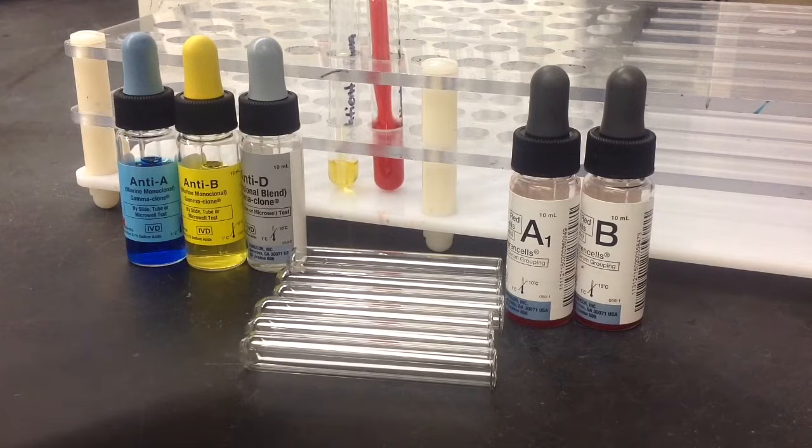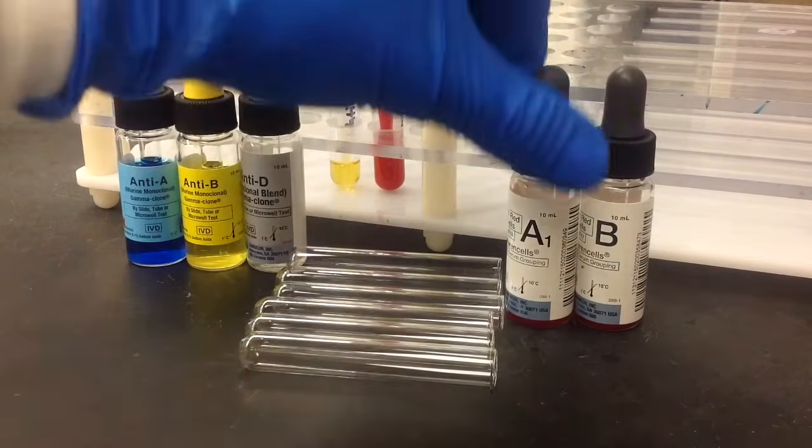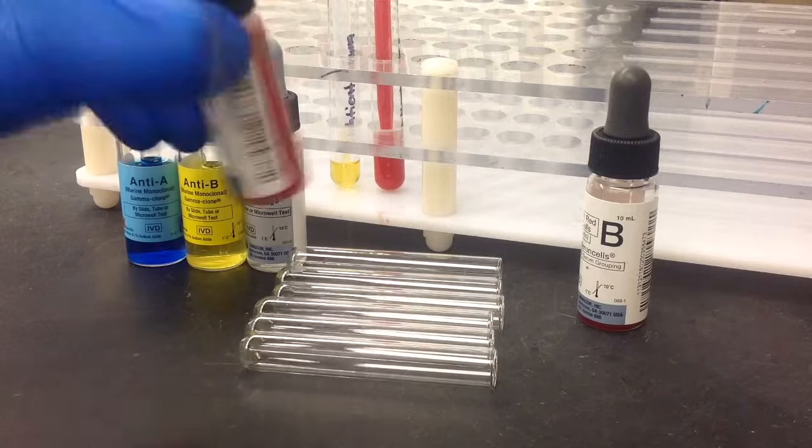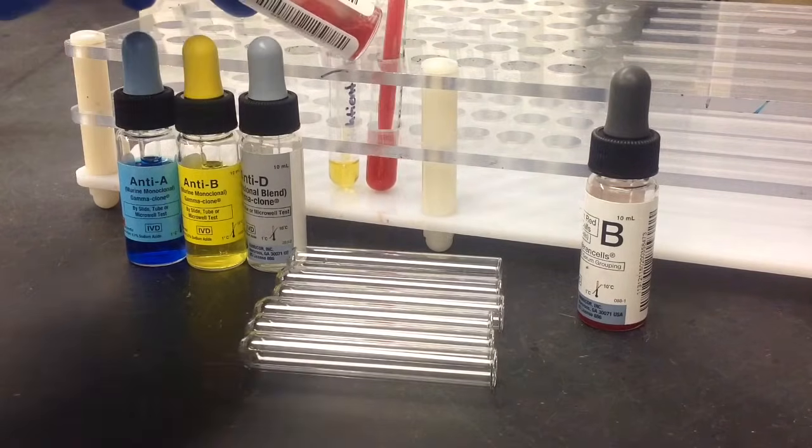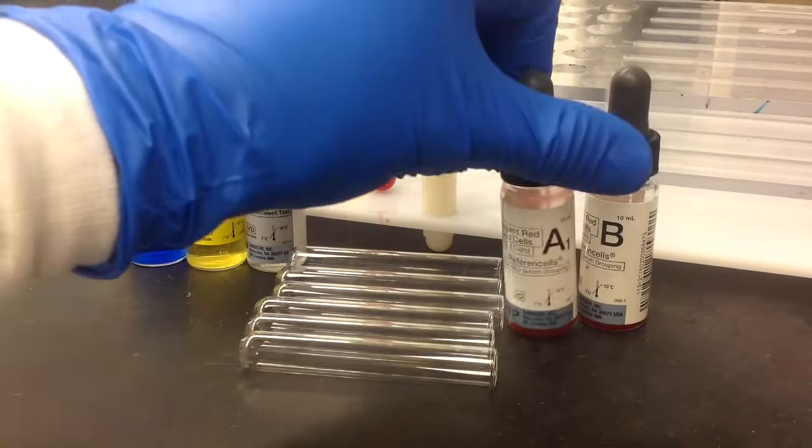And I'm shooting for approximately 3%, and I'm using physiological saline for this. If you're not exactly sure what 3% should look like, you can use your reagent red cells to make a comparison. And the reagent red cells should be about 2% to 4%, so if they look the same, you're pretty close.